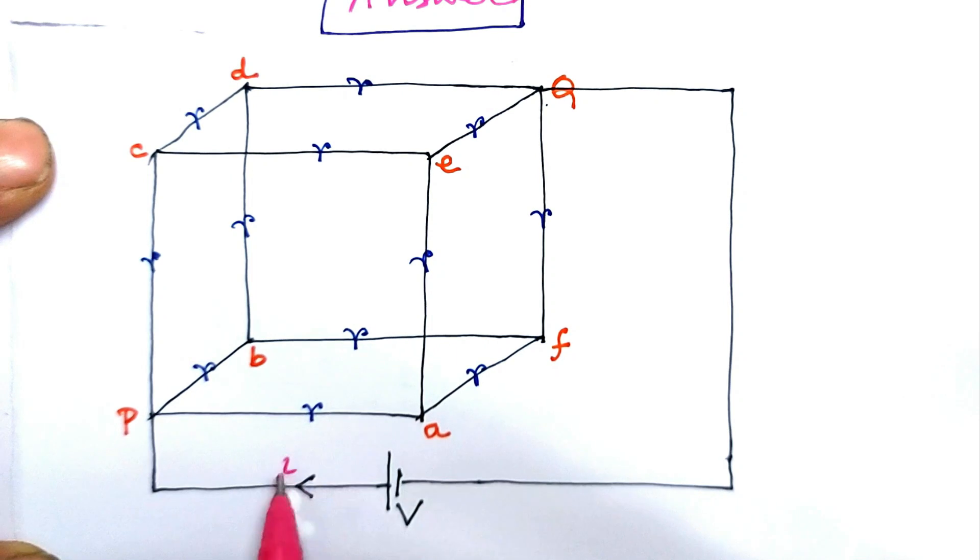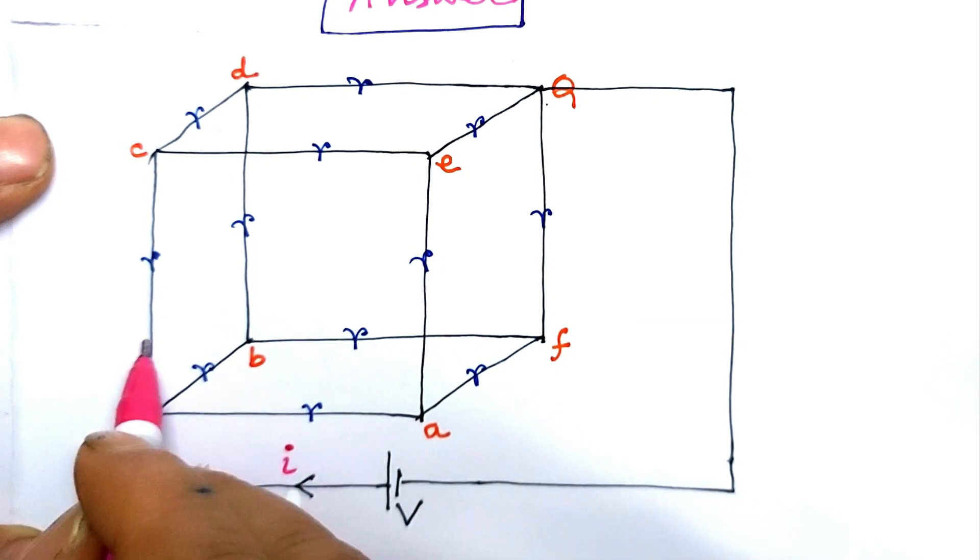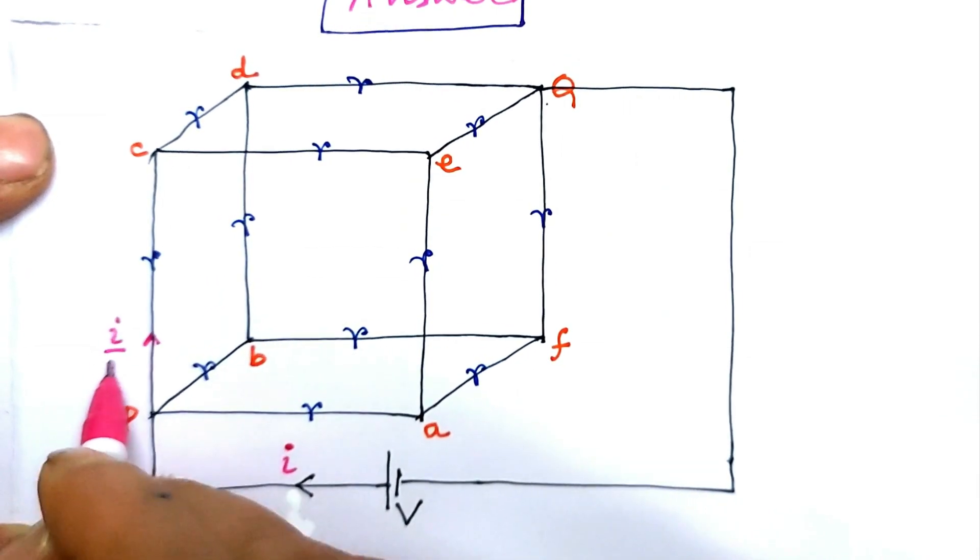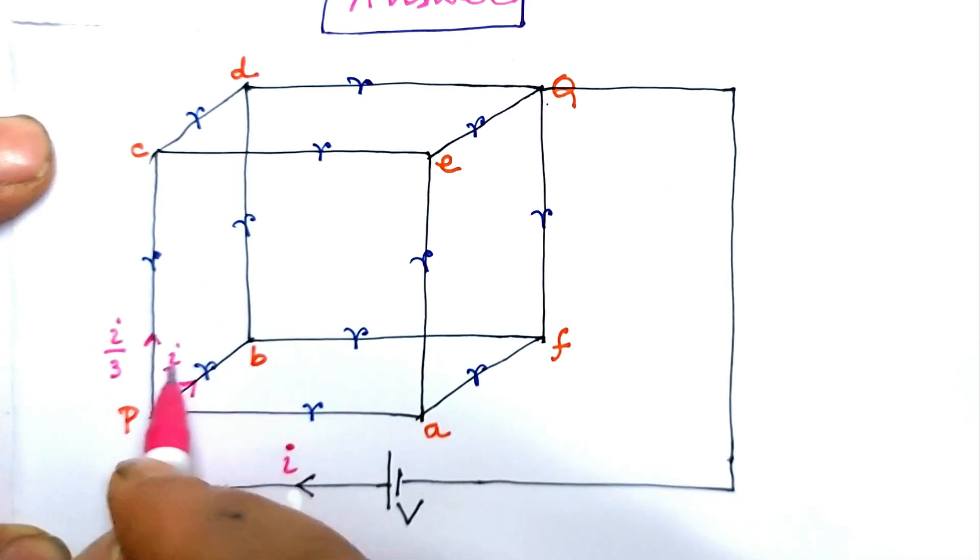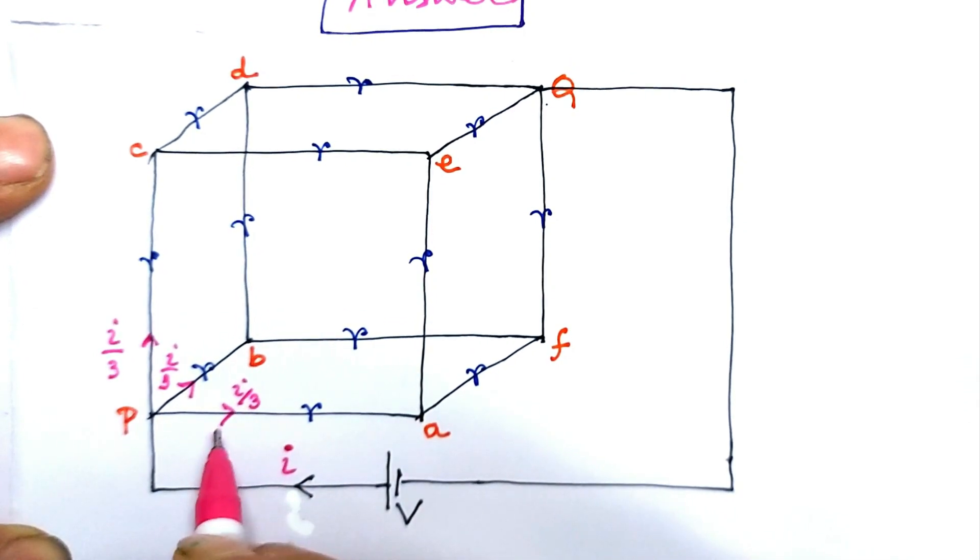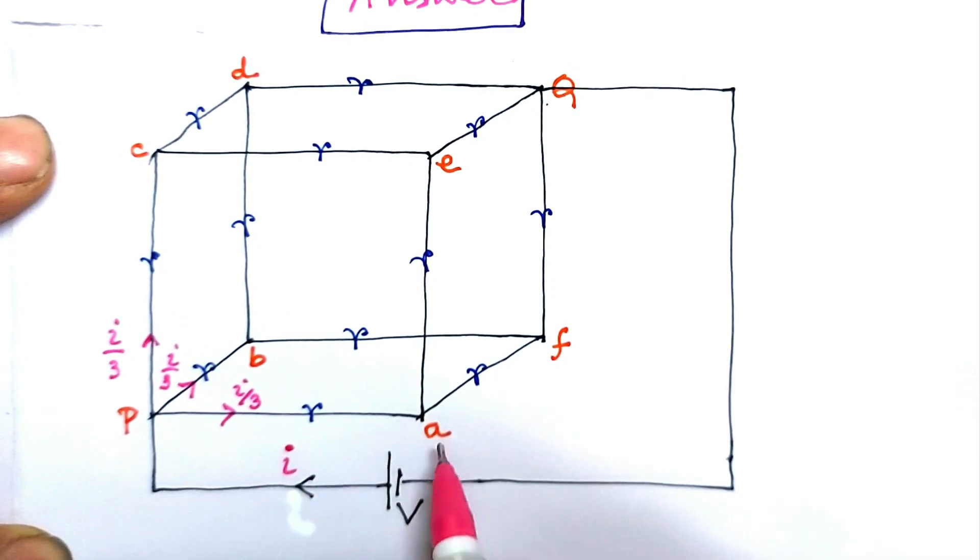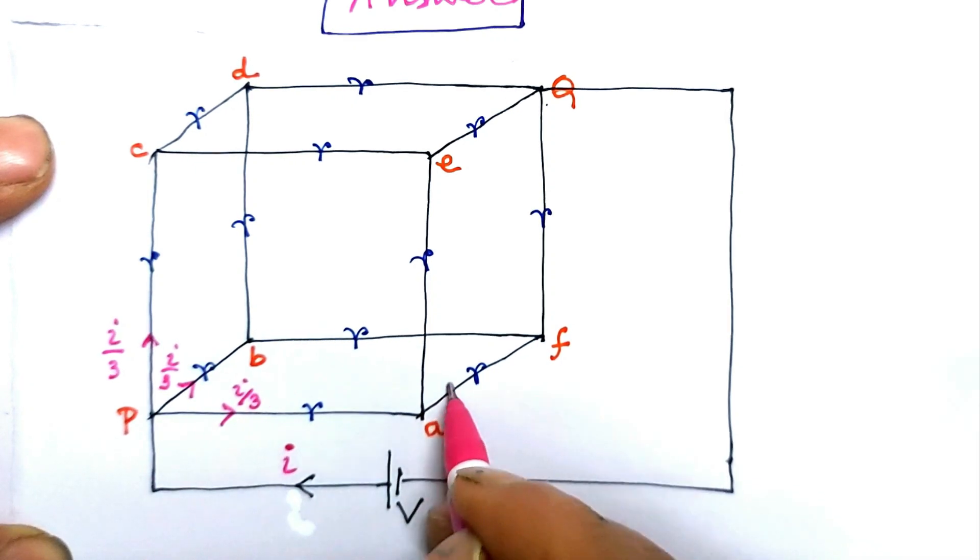i and it gets equally divided at point p into i by 3 along pc, i by 3 along pb, and i by 3 along pa. At point a there is further equal division of current, so current is...